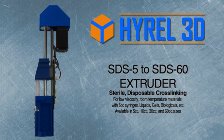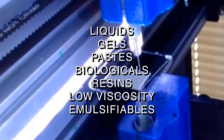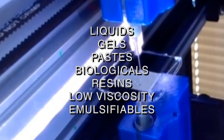The SDS-5 takes a 5cc disposable sterile syringe and industry standard luer needles. This head is also available in 10, 30, and 60cc's. This is ideal for low viscosity, room temperature emulsifiables, liquids, gels, including biologicals.